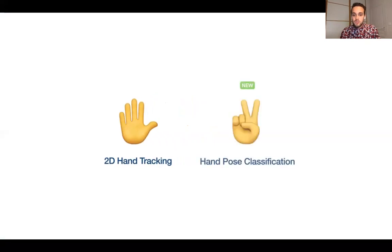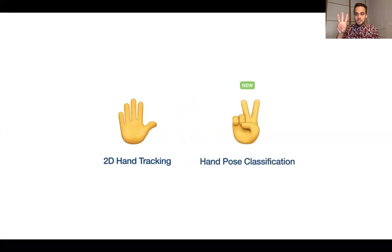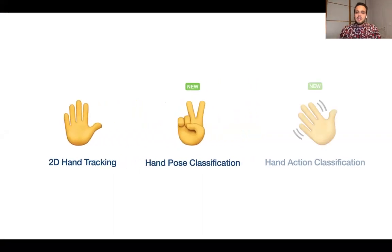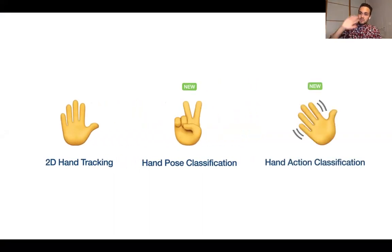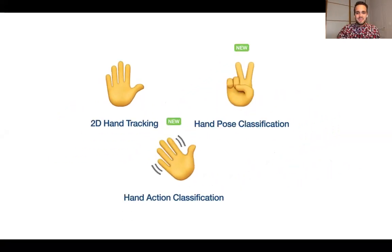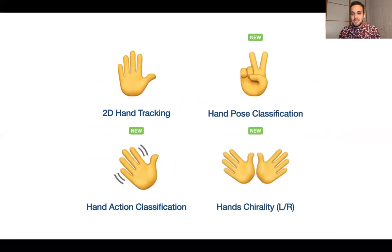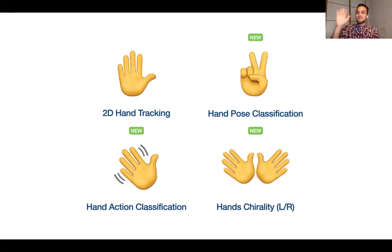First, there's hand pose classification — you can do any gesture and it will be recognized. Then hand action classification — dynamic movements like a wave or an expression. And finally, hand chirality, which means detecting whether it's a right or left hand.